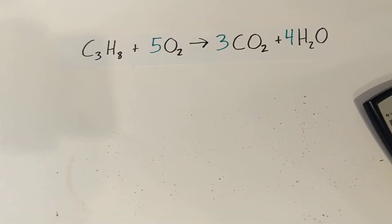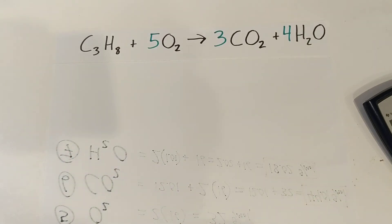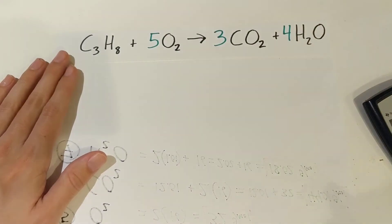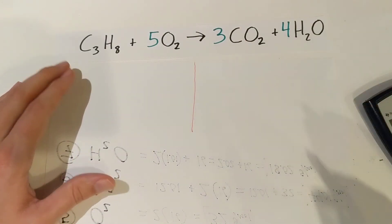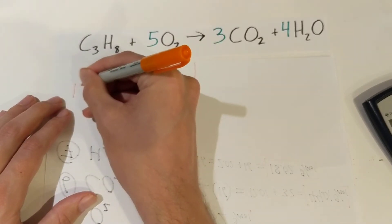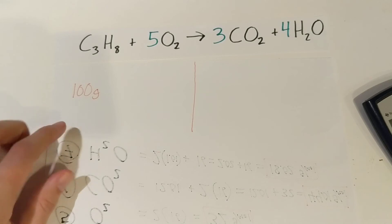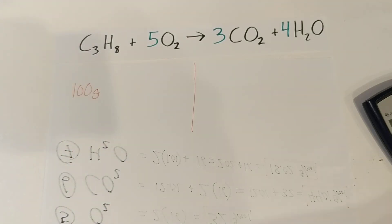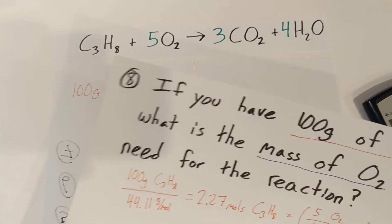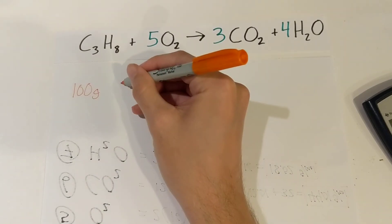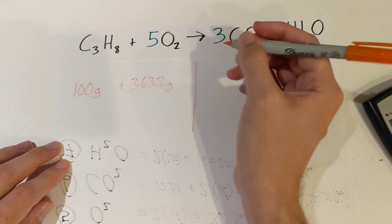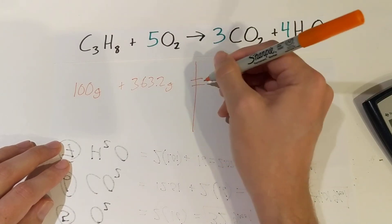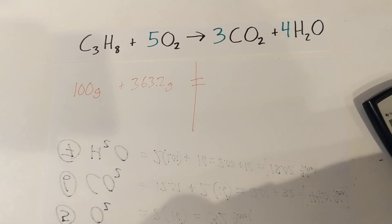Question number 11 is all about conservation of mass. The mass of our propane and our oxygen should equal the mass of our carbon dioxide and our water. Let's test this out. We always started with 100 grams of propane. When we solved for oxygen, we had 363.2 grams of oxygen.